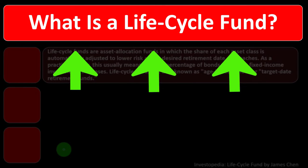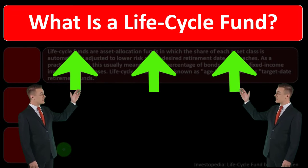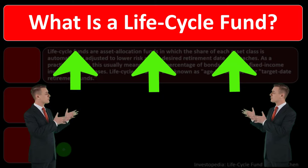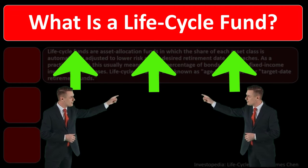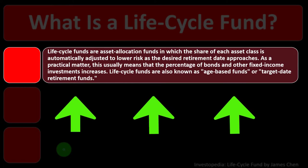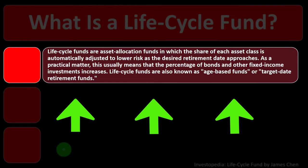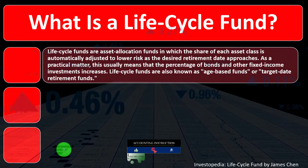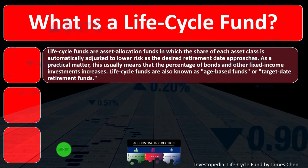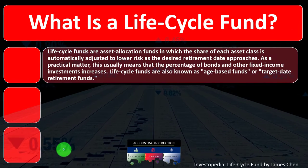We can choose a target fund that does the rebalancing basically for us, in a kind of best-practice approach using general theories as we get close to retirement. As a practical matter, this usually means that the percentage of bonds and other fixed income investments increases. Life cycle funds are also known as age-based funds or target date retirement funds. The names all make sense: as we go through our life cycle and get older, the fund changes to be optimized in accordance with our age, or targeted toward retirement.